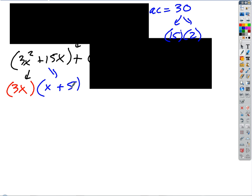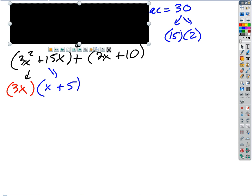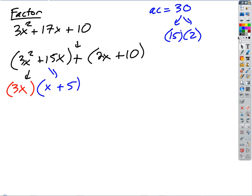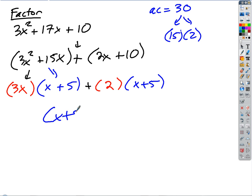Now focus on the second group. The leftover from the second group must match the first group's leftover — (x plus 5). So I write that immediately. The only question is what would I distribute to (x plus 5) to get 2x plus 10? Just plain old 2. So the final answer, grouped into two pieces, is (x plus 5) times (3x plus 2). And we're done — good job.